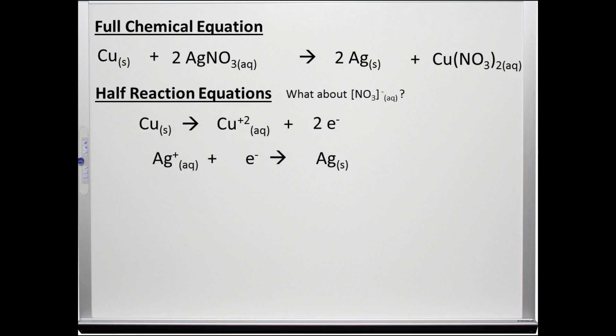Note that the nitrate anion in this example neither gains nor loses electrons. It is present to balance the charge of the solution but does not take part in the electron transfer process. We call this type of ion a spectator ion.